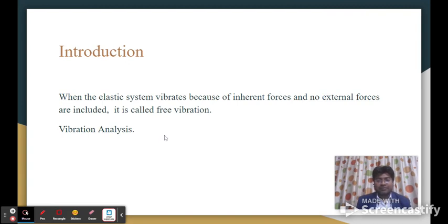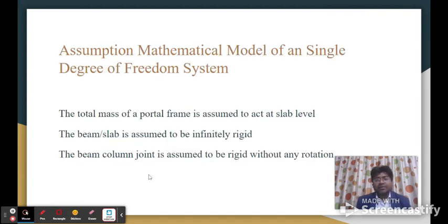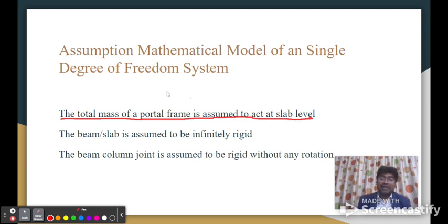Now, assumptions in making the mathematical model of single degree of freedom. The first assumption is the total mass of the portal frame is assumed to act at slab level. Most importantly, this means that column masses are ignored.